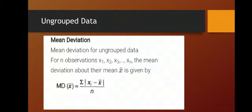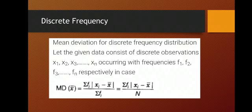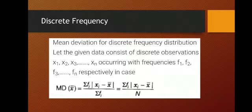Here n is the total number of observations. From mod of (xi minus x-bar), we are finding how much the entries are deviating from the mean value. Next, in case of discrete frequency, we consider observations x1, x2, ..., xn occurring with frequencies f1, f2, ..., fn respectively. The mean deviation about the mean in case of discrete frequency will be summation of fi into mod of (xi minus x-bar) upon summation of fi, that is n.